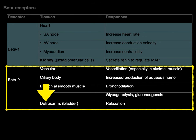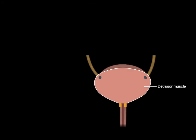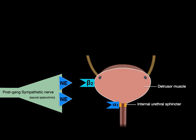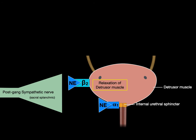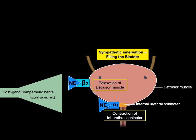Finally, the detrusor muscle stimulation causes relaxation. Here is the detrusor muscle of the bladder, which has beta-2 adrenergic receptors. Remember that at the neck is the internal urethral sphincter with an alpha-1 adrenergic receptor. So when sympathetic nerves release norepinephrine, you get relaxation of the detrusor muscle and contraction of the internal urethral sphincter, both of which help with filling of the bladder.